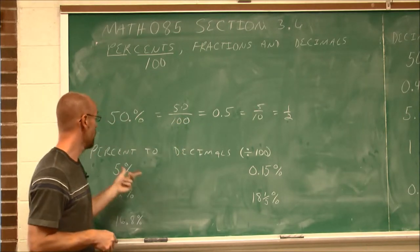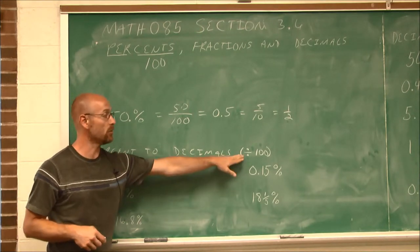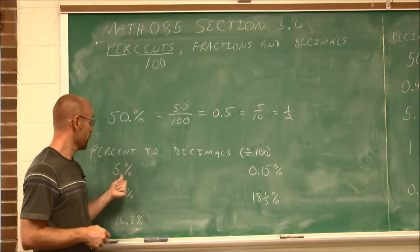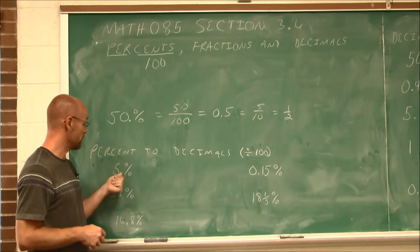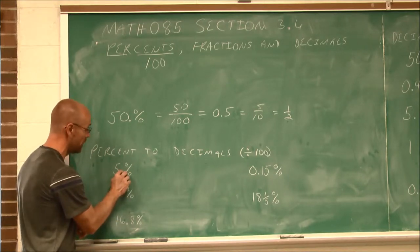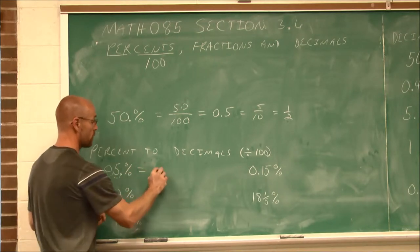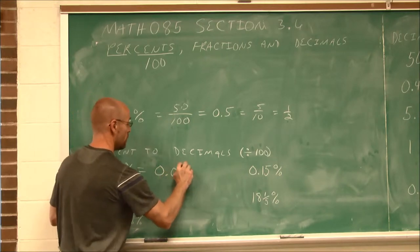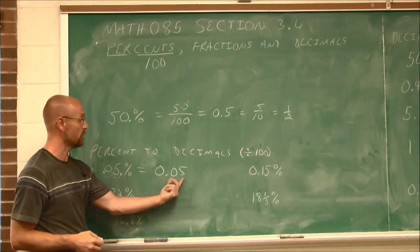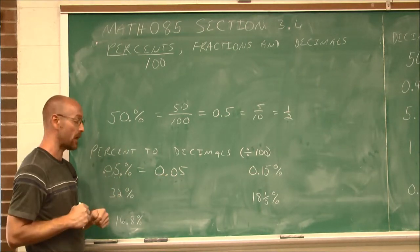Let's look at some examples — converting given percents to decimals. To do that, we divide by 100, which means moving the decimal two spots to the left. For 5%, moving two spots gives us 0.05, or 5 one-hundredths. For 32%, moving the decimal two spots to the left gives us 0.32, or 32 one-hundredths.